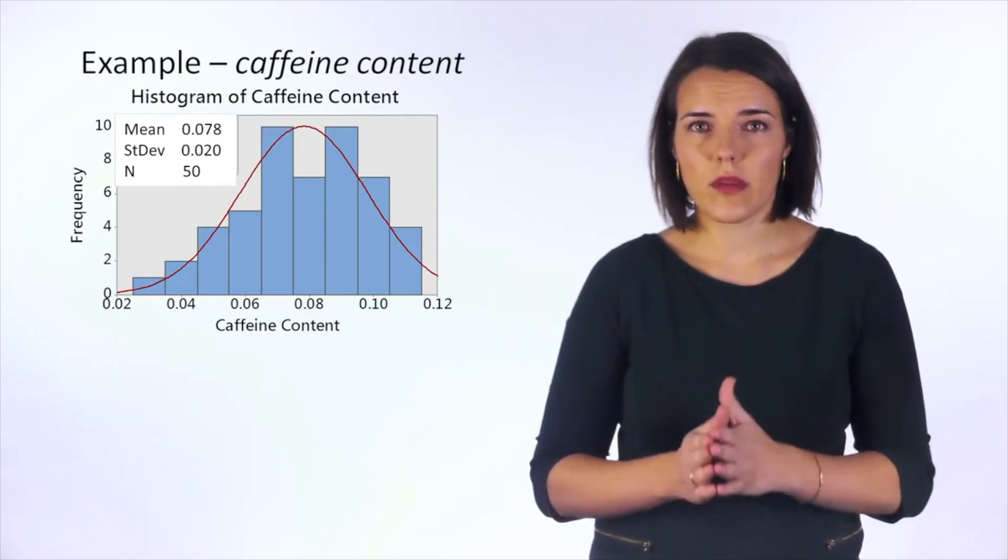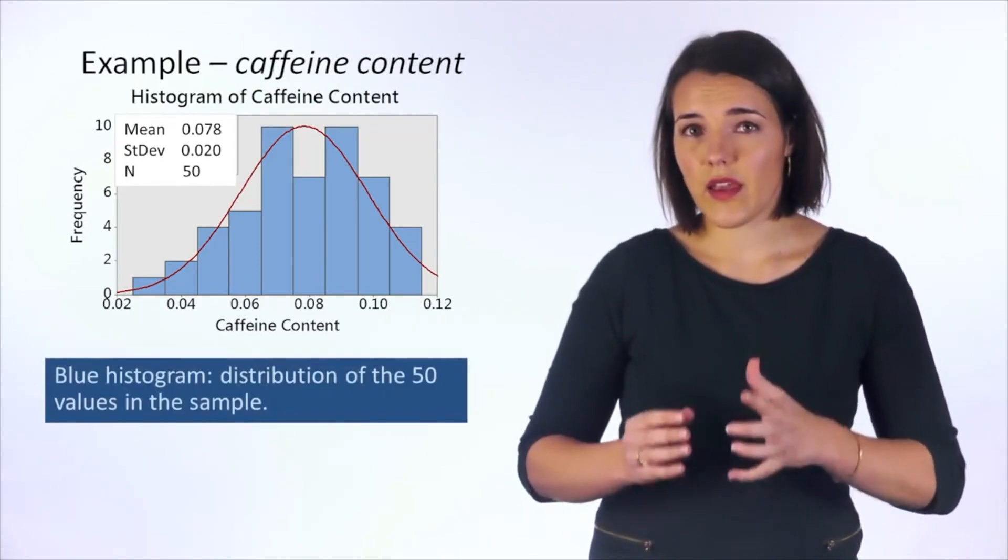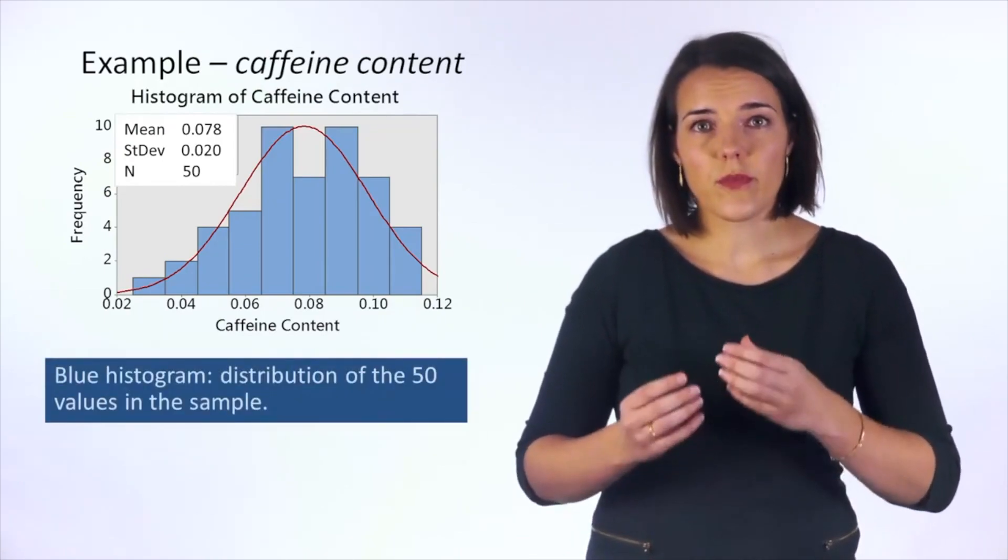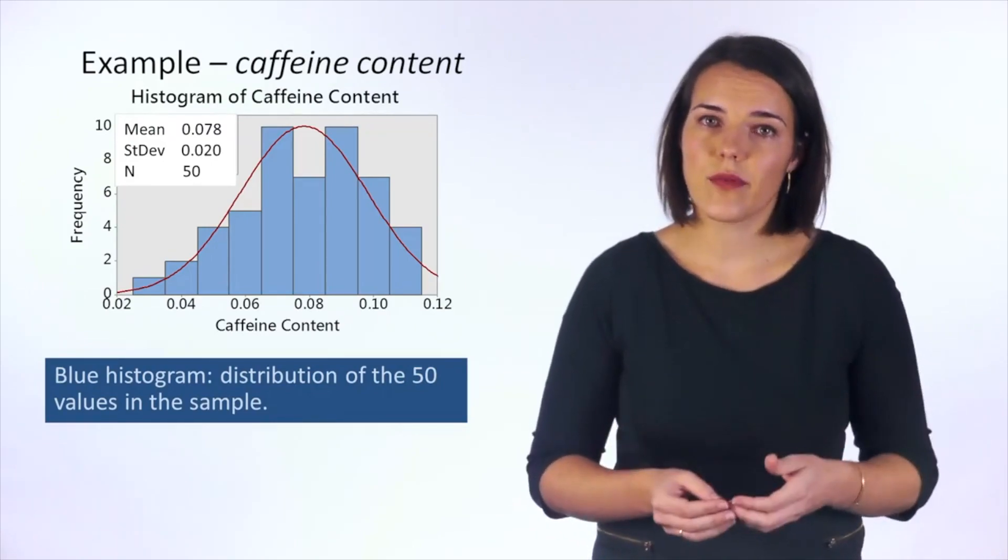It is symmetrical around the mean. The blue bars in the histogram show the distribution of the 50 values in your measured sample.